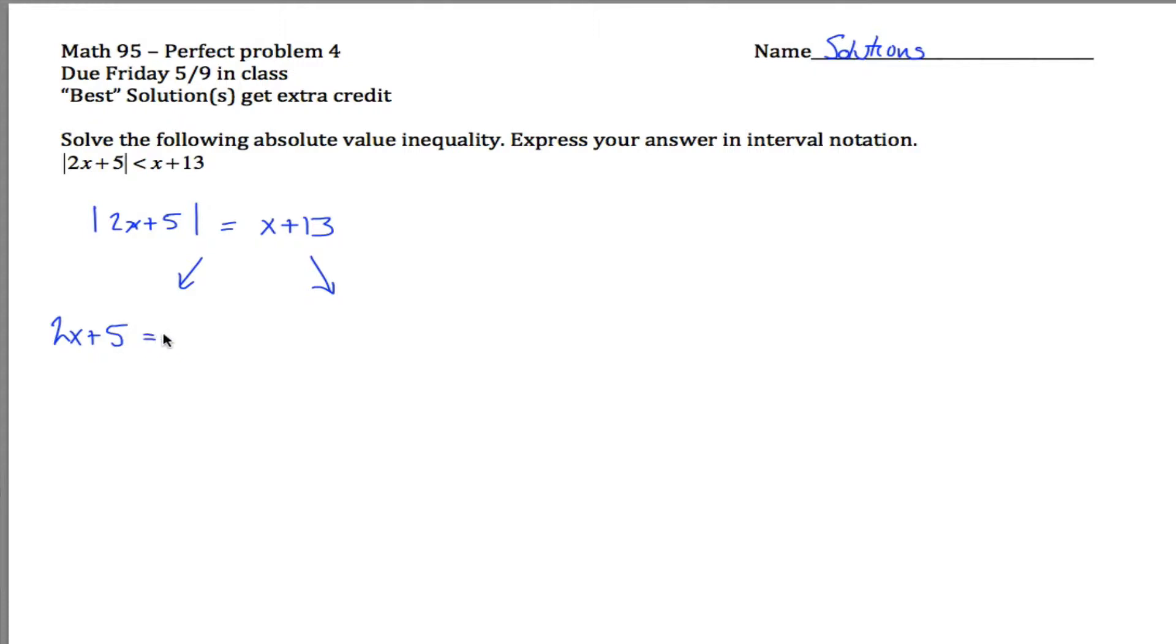So if 2x plus 5 is positive, I don't even need to write the absolute value symbols because they're not doing anything. The absolute value of a positive number is just that number. So in the case that 2x plus 5 is positive, I get here.